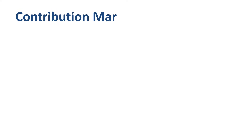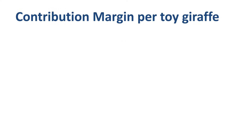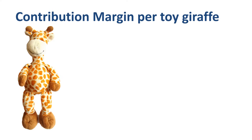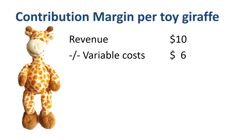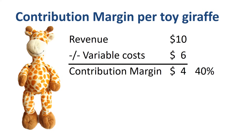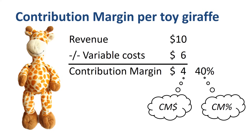Contribution margin per unit: in the toy giraffe company, every unit is sold at $10. The variable costs to make a unit are $6. Therefore the contribution margin is $4, or 40% of revenue. Each incremental toy giraffe that is produced and sold contributes an extra $4 to cover fixed costs.